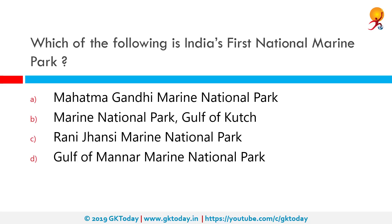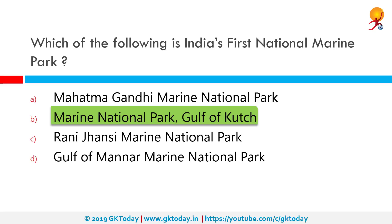Which of the following is India's first national marine park? That honour belongs to the Marine National Park of the Gulf of Kutch. It is situated on the southern shore of the Gulf of Kutch in the Devbhumi Dwarka district of Gujarat state. In 1980, an area of 270 square kilometers from Okha to Jodiya was declared a Marine Sanctuary.